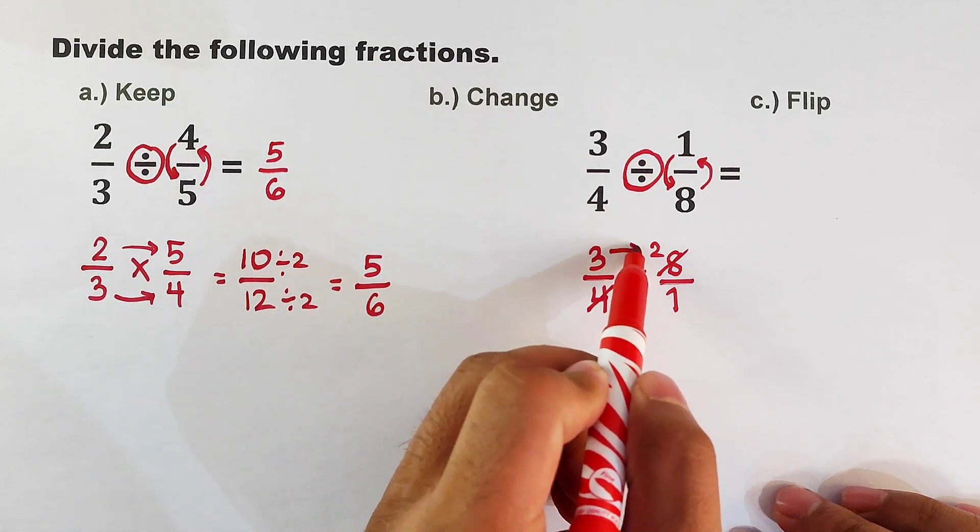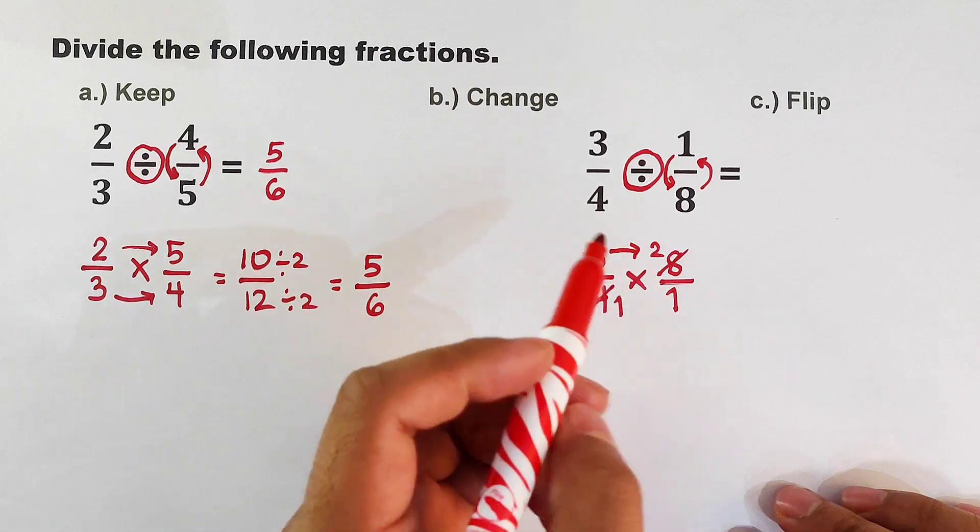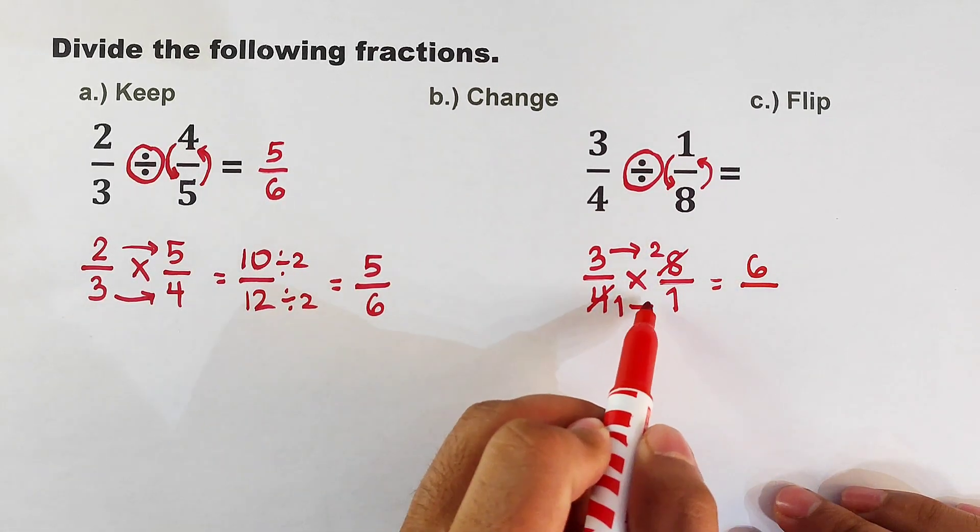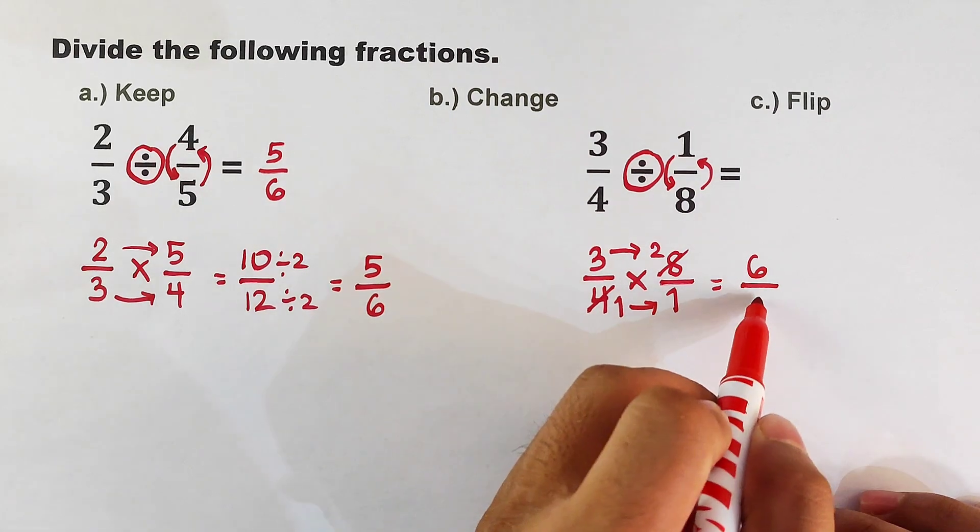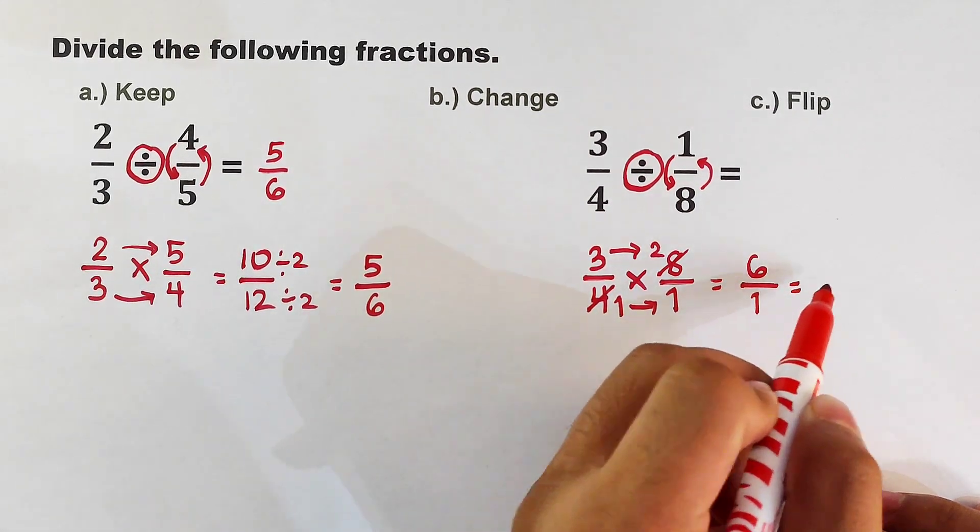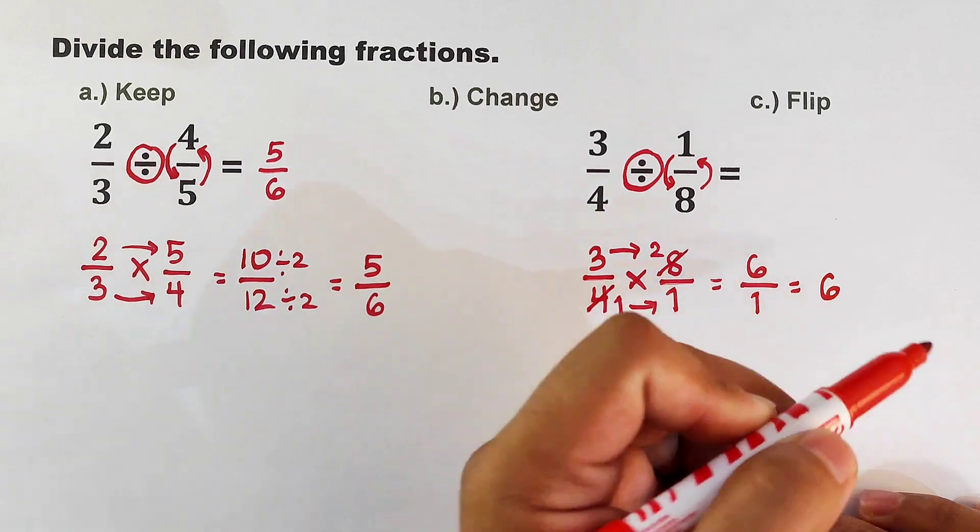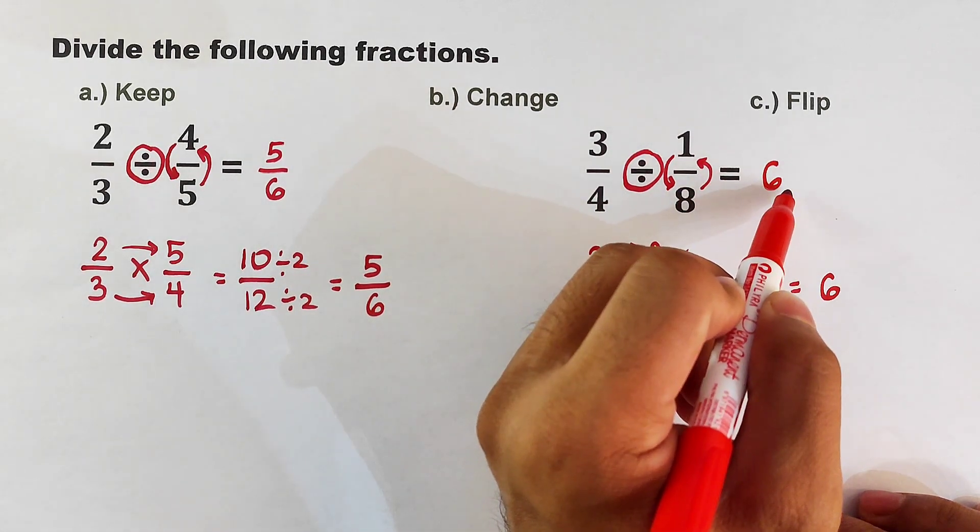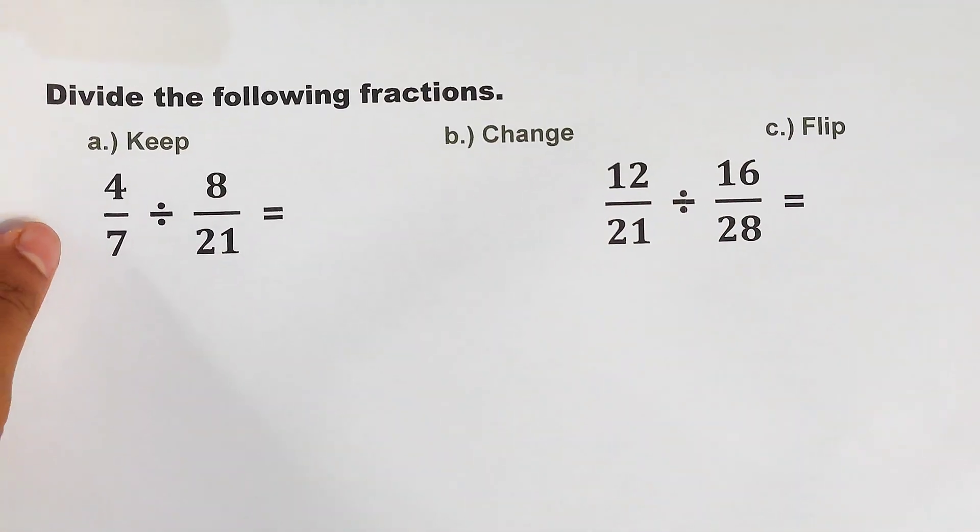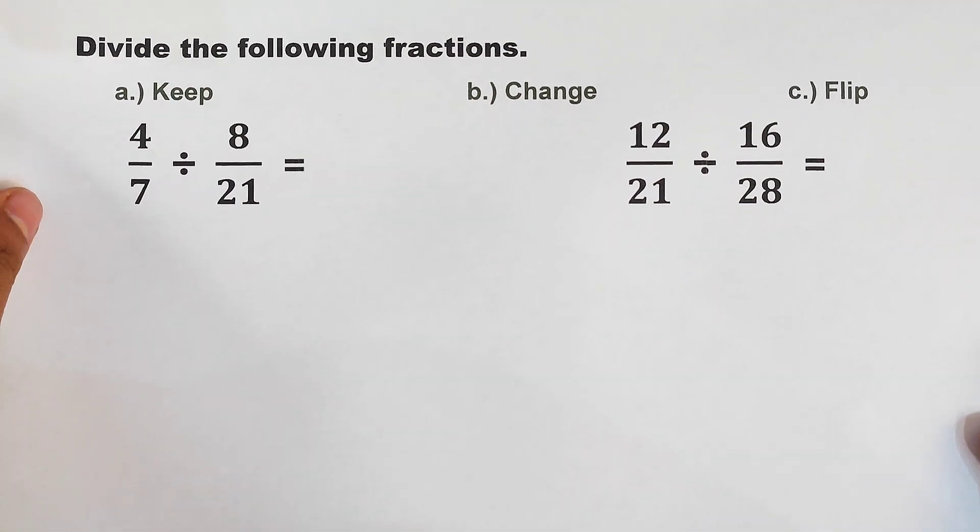After cancellation, we can multiply the numerators: 3 times 2 that would be equal to 6 over your 1 times 1, that is equal to 1. Or simplifying this fraction 6 over 1, this will give us the answer of 6, meaning the answer is simply 6.